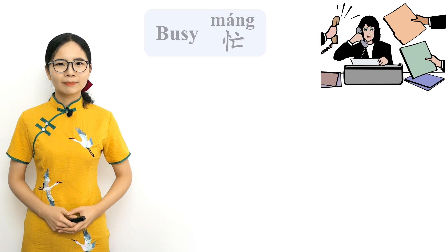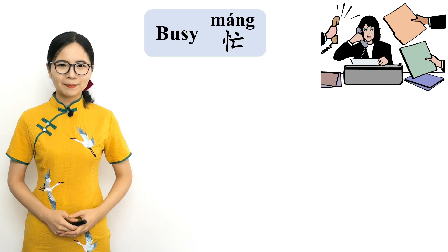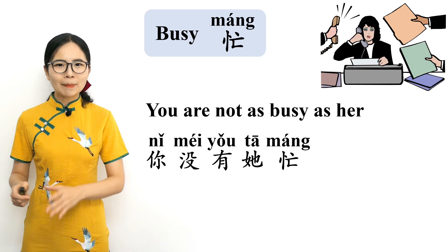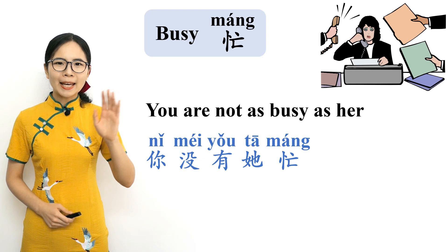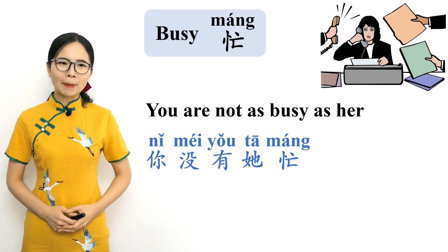Busy in Chinese is 忙. Please repeat after me. 忙 — busy. How do you say 'you are not as busy as her'? Exactly. 你没有她忙. Please repeat after me. 你没有她忙. You are not as busy as her.